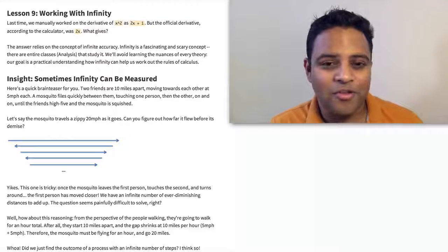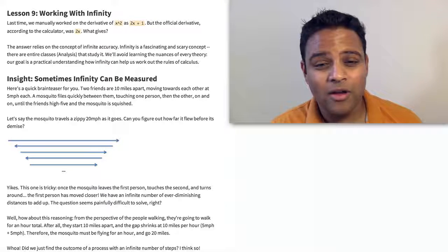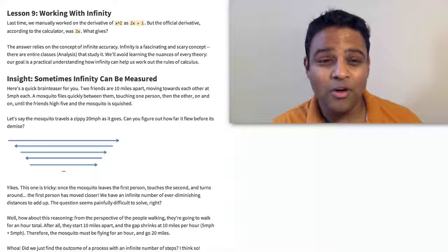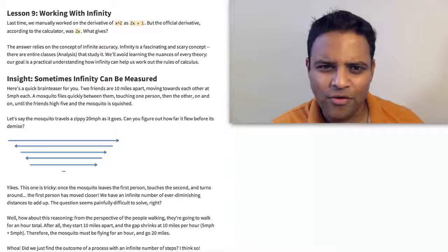Hi everyone, welcome to the next lesson. If you remember last time we tried to work out the derivative of x squared and it turned out to be 2x plus 1 when we did it manually, but according to the calculator it was actually 2x. So what's the difference? What happens?